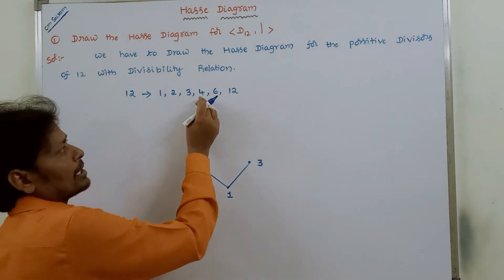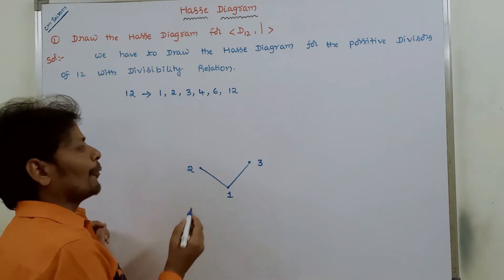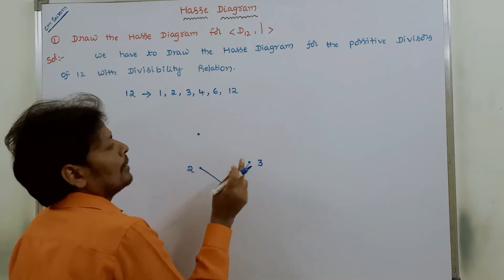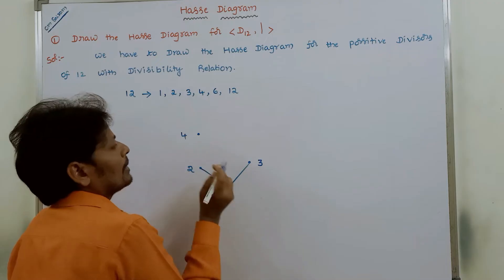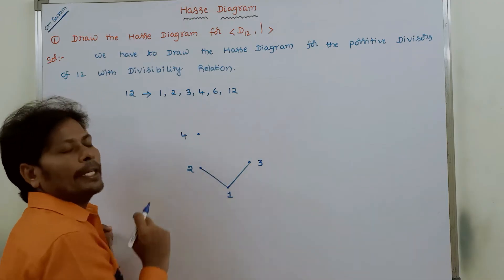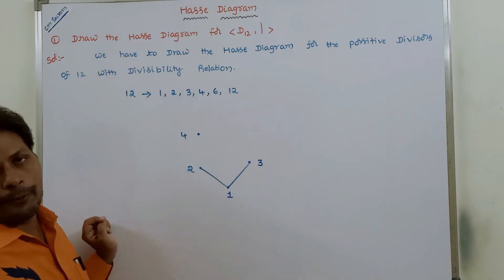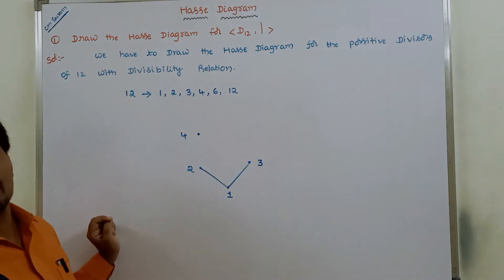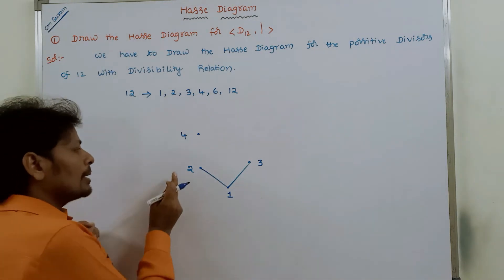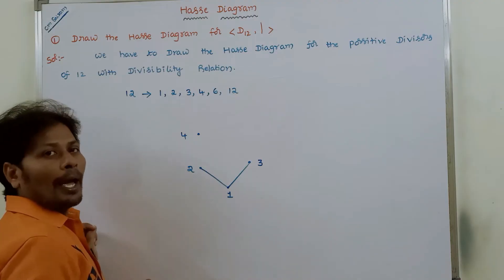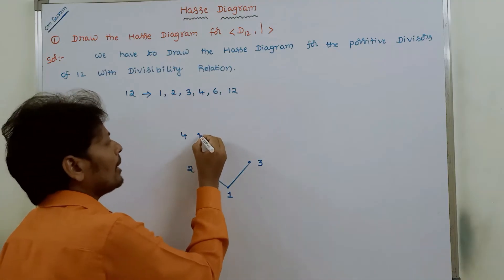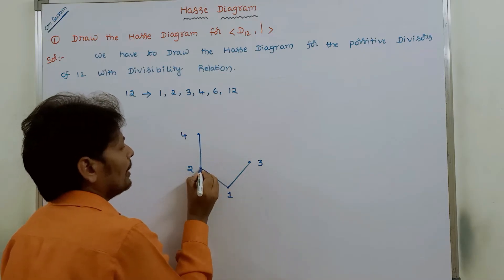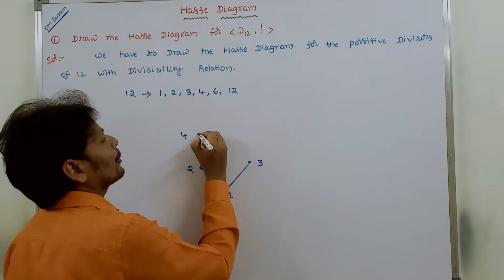The next positive divisor is 4. Since 3 does not divide 4, we do not draw an edge between 3 and 4. But 2 divides 4, so we have to draw the edge between 2 and 4, because 2 divides 4.